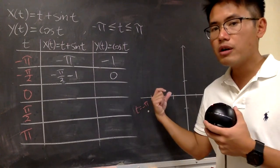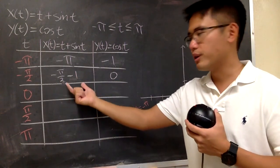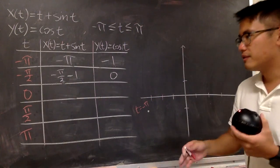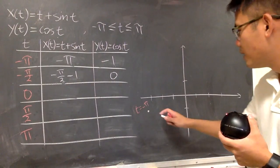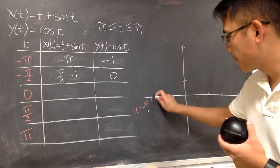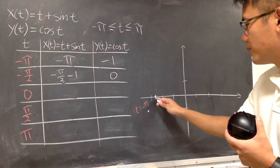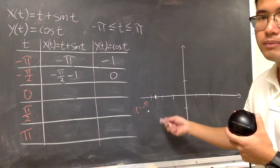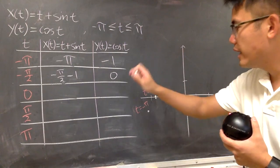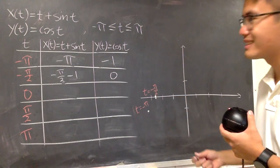Therefore, you're going to plug this right here, and you can use a calculator to get an estimation. This is about negative 2.5 something, or 6 something. Well, it's just going to be somewhere right here. Let me just indicate that. Negative pi over 2 minus 1, comma 0, and this is when t equals negative pi over 2.